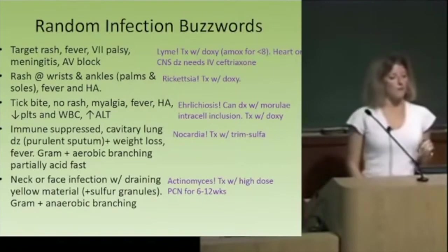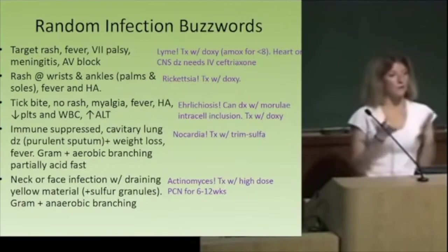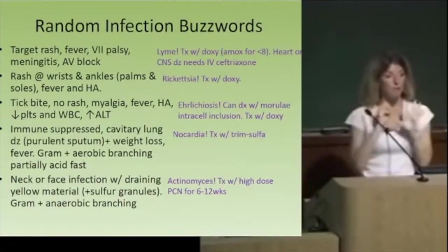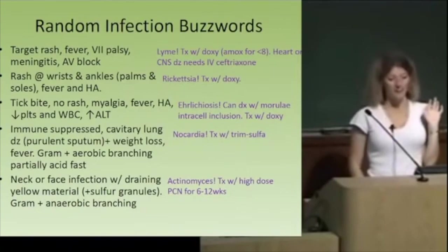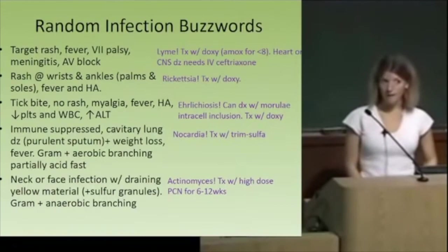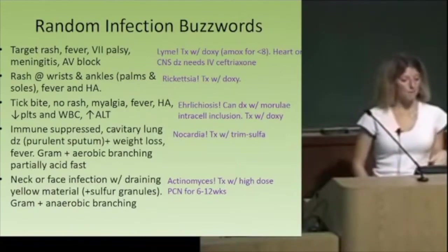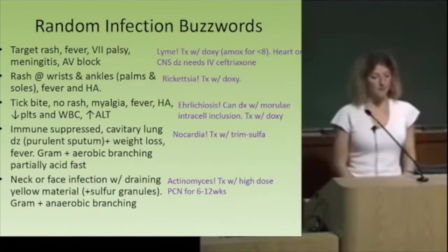In an immunosuppressed patient with cavitary lung disease, weight loss, fever, and gram-positive branching bugs in sputum that are partially acid-fast — that's nocardia. Aerobic, found in the lung, treat with trimethoprim-sulfamethoxazole. The other branching bacteria that is anaerobic is actinomyces, and for that we need high-dose penicillin.